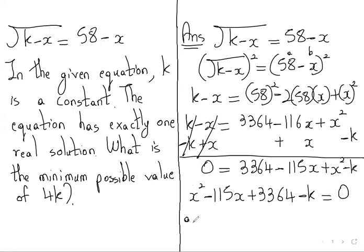So here, before x square there is nothing, so a is equal to 1. Before x there is minus 115, so that is our b. Then c—this whole is a number together—so 3364 minus k is the number.